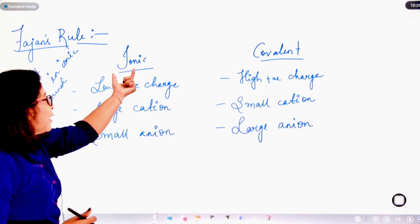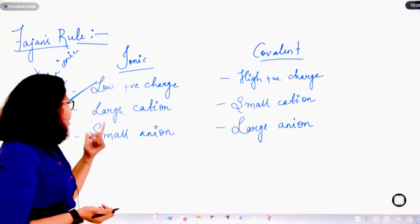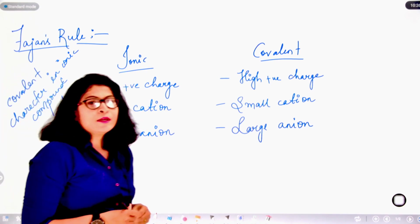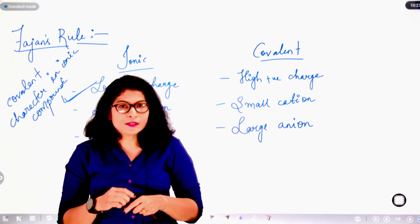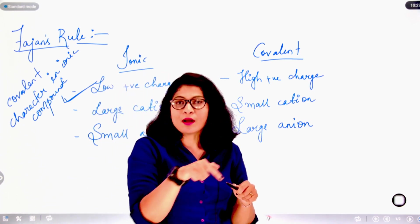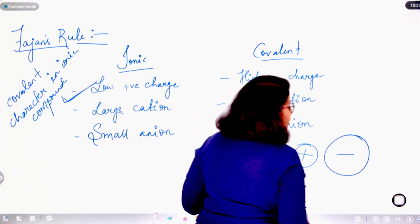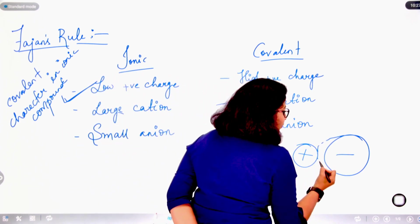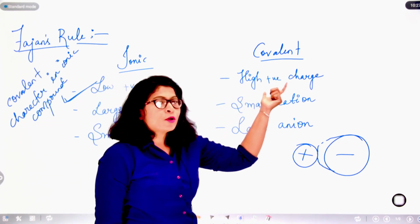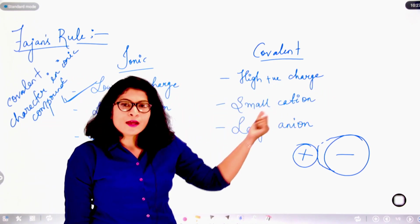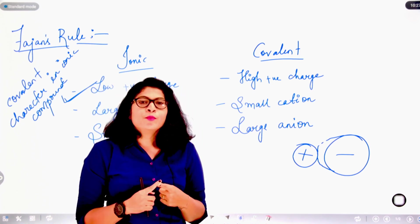According to Fajans, ionic character will increase if the positive charge on the cation is low, the size of the cation is large, and the size of the anion is smaller. If the distance from the nucleus of the cation is less, the nuclear influence on the outermost electron increases, and it can pull nearby electrons with a greater force. As a result, the shape of the anion, assumed to be spherical, becomes distorted, leading to development of covalent character. Covalent character depends on higher positive charge on the cation, smaller cation, and larger anion. The two key properties are polarizing power of the cation and polarizability of the anion.